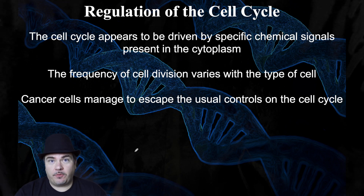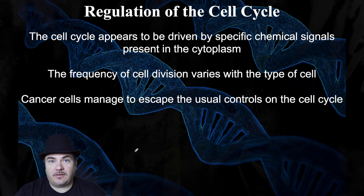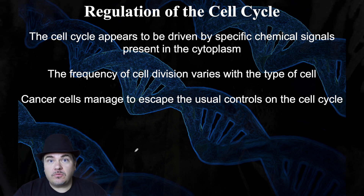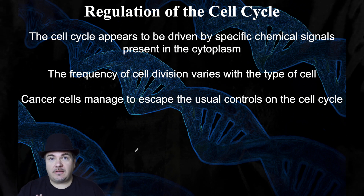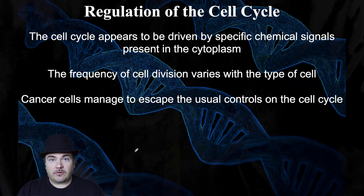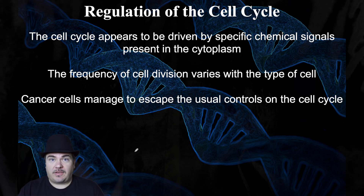Dr. Sage, back with the fourth and final video in the series discussing the cell cycle and mitosis. In this video, we're going to talk about how the cell regulates the cell cycle, because you need the ability to make new cells whenever you need new cells, but you also want to make sure you're not making cells when you don't need those cells.